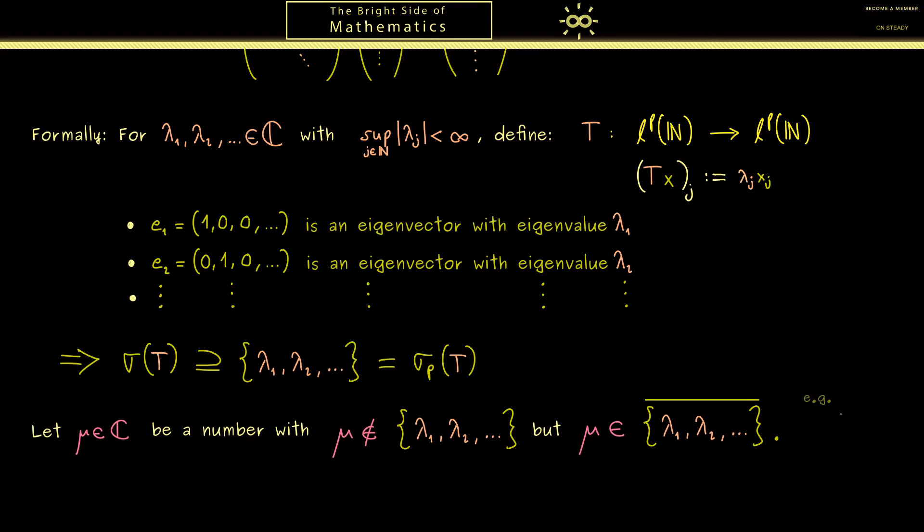Maybe an example is very helpful here. So it could happen that lambda j is given as 1 over j. Then the only possible accumulation point would be mu as 0. Hence in this example we would have our eigenvalues as 1 over j, so they tend to 0, but 0 itself is not an eigenvalue. In fact this is the general result.